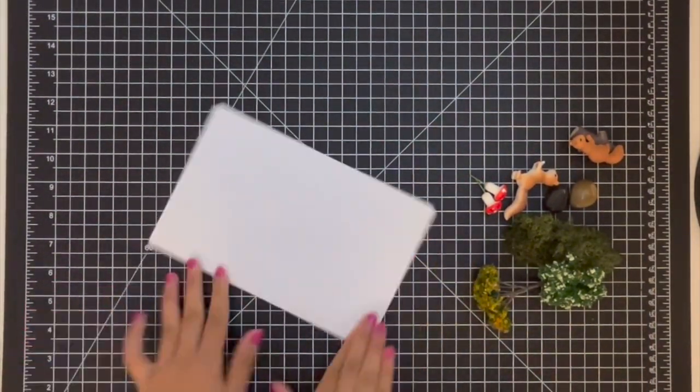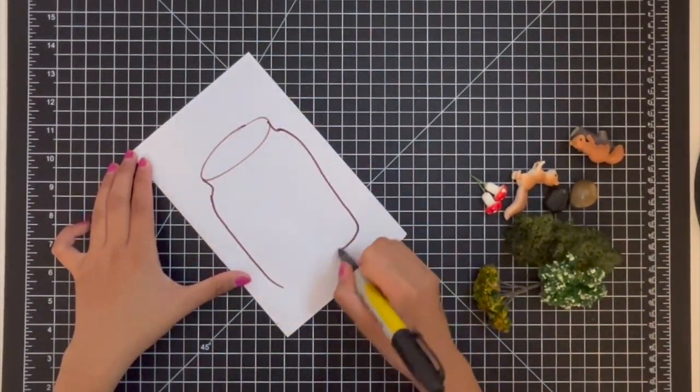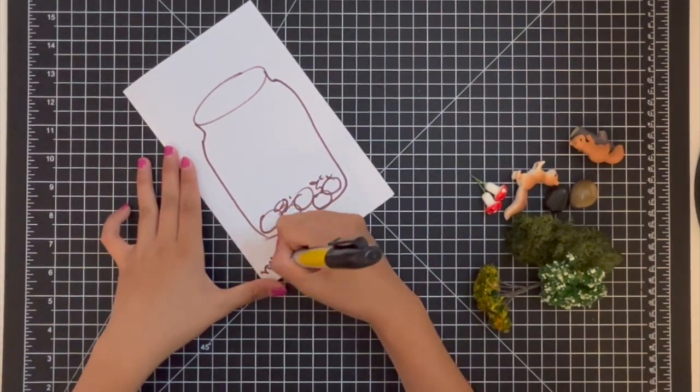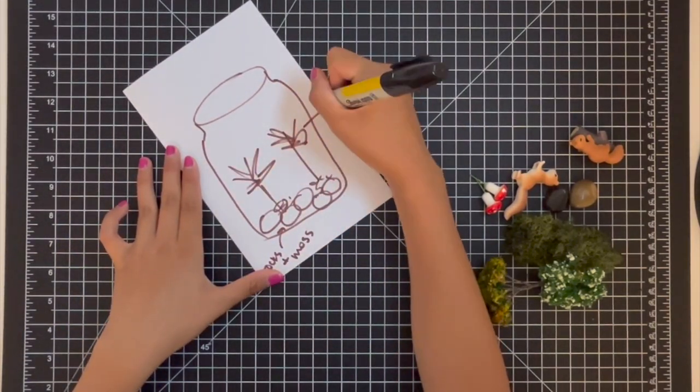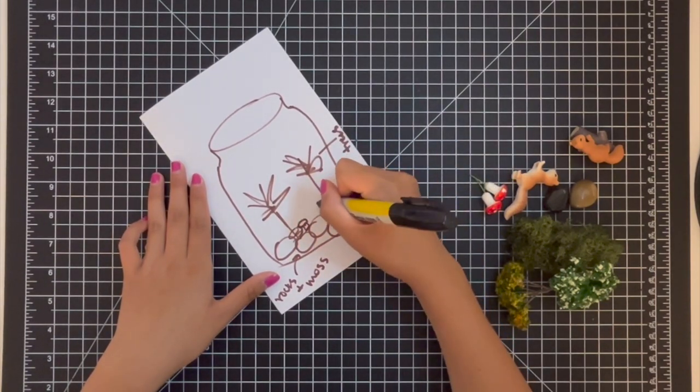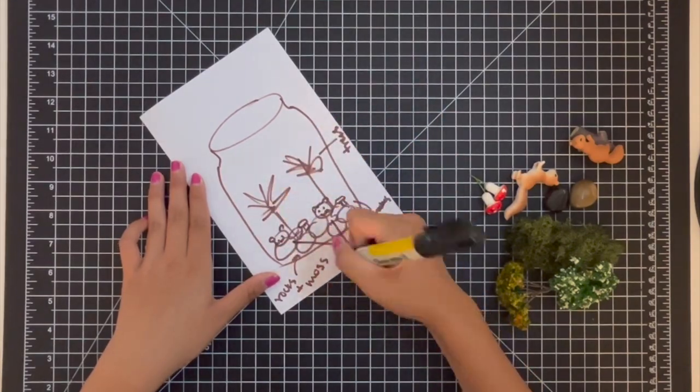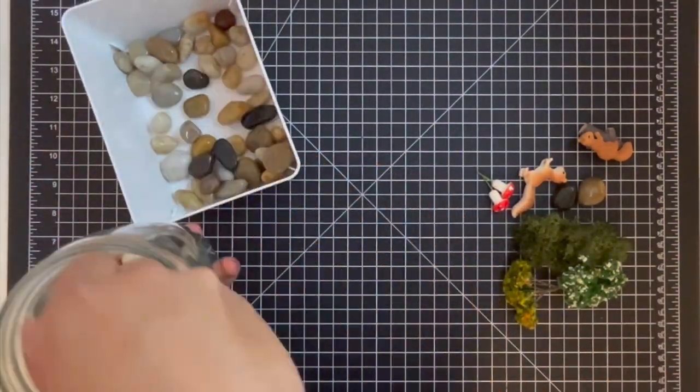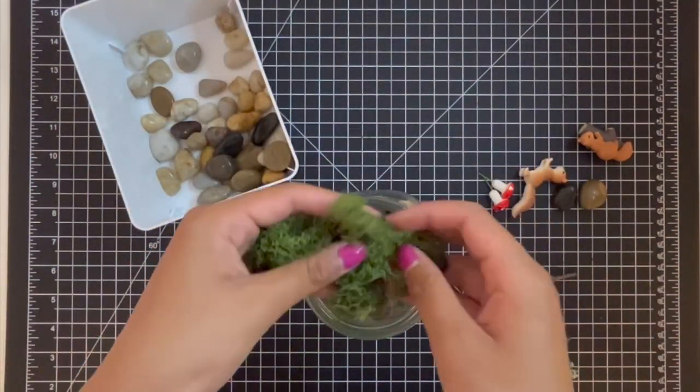Now that we have everything we need, let's get started. The first thing we're going to do is design our scene inside the mason jar. This part is really up to you but I would recommend making a sketch or rough draft before putting everything into your final mason jar. Also make sure that everything you want to add fits in the jar.